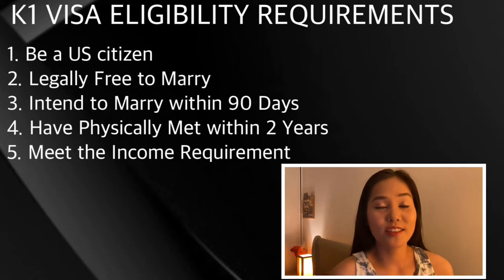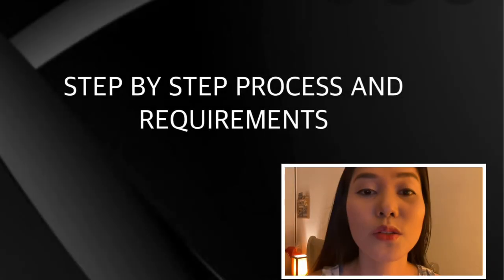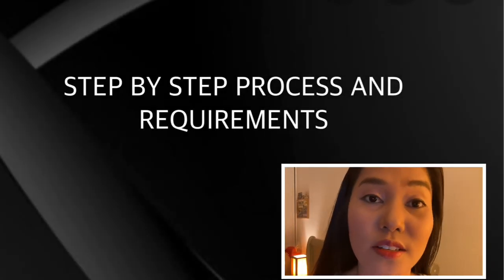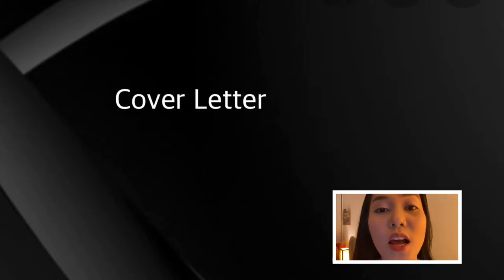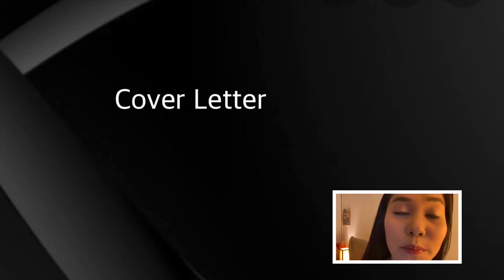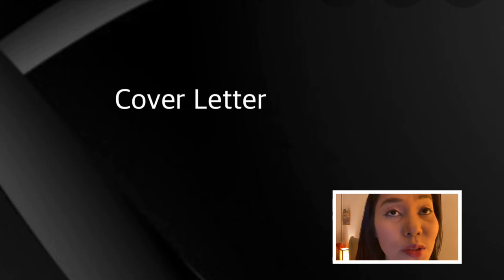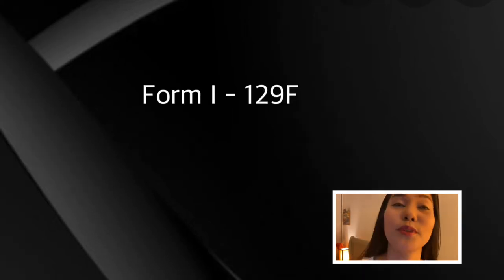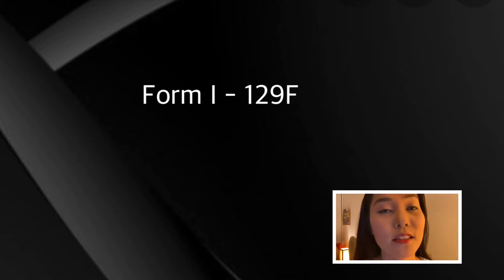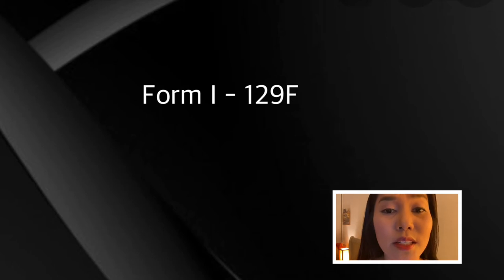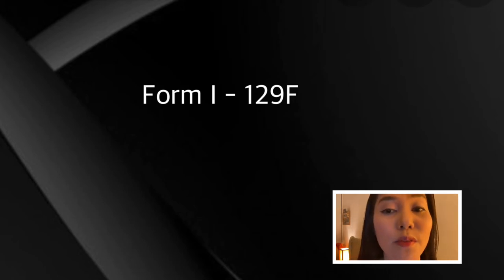If you pass all these eligibility requirements, then you can now start the application. What are the steps to apply for a K-1 visa? Number one, make a cover letter. This should list the petition's contents and a complete description of what you are petitioning. Do not forget to sign and date the letter. Number two, fill out the form I-129F petition for alien fiancé. The petitioner must submit the form I-129F for alien fiancé. You can download this form on the official USCIS website provided at the bottom of this video.